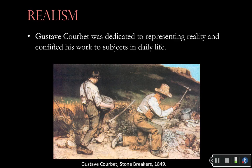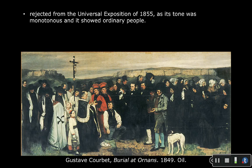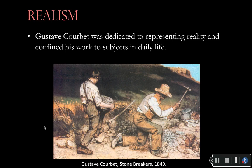Lastly, I want to talk about Realism. Gustave Courbet is a French artist dedicated to representing reality and confining his work to subjects of daily life. Here you see The Stone Breakers. He also made another important painting that was rejected from the Universal Exposition — an important show in 1855 — because its jurors thought the tone was too monotonous and showed people who were just too ordinary. With Realism, these are just two people breaking stones, doing their everyday job — a complete rejection of the interest in nature and the sublime.